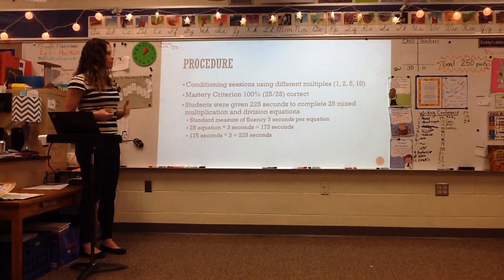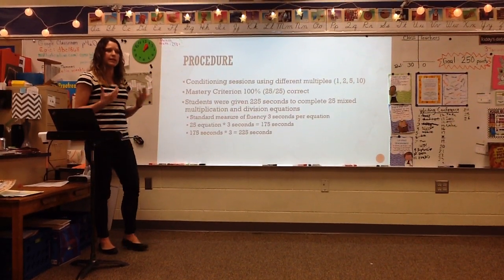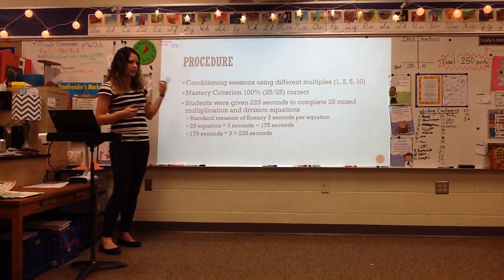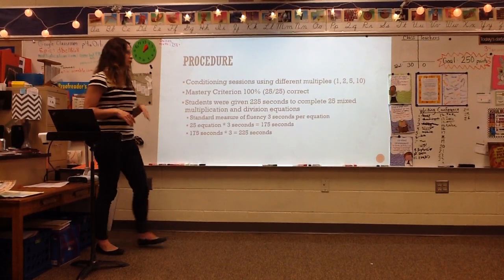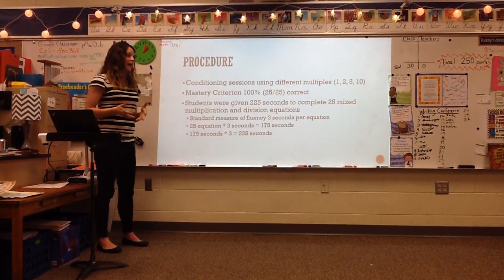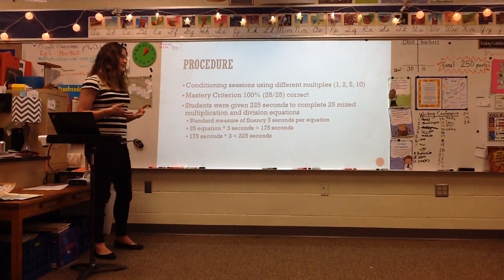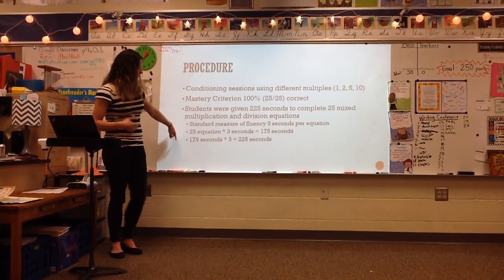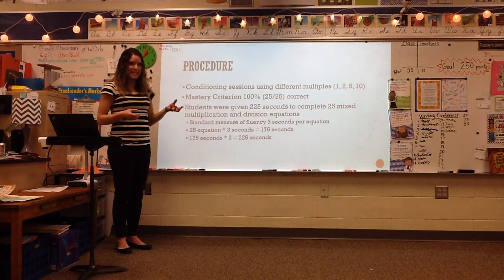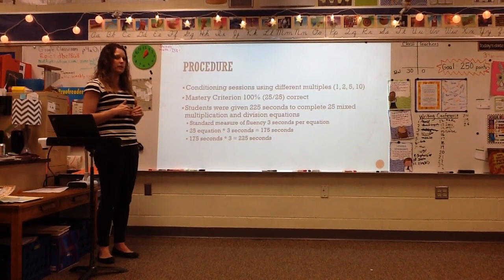On a daily basis, beforehand conditioning sessions will use different multiples — 1, 2, 5, and 10 — to let kids experience the different conditions using multiples they'll have success with. I'm going to keep the mastery criterion for both the conditioning and the study at 100%, meaning they'll have to get 25 out of 25 equations correct. The students will be given 225 seconds to complete those equations. That number is based on the standard measure of fluency, which is 3 seconds per equation. With 25 equations at 3 seconds each, that's 75 seconds, and for this study because of the difficulty, I tripled it to get 225 seconds.